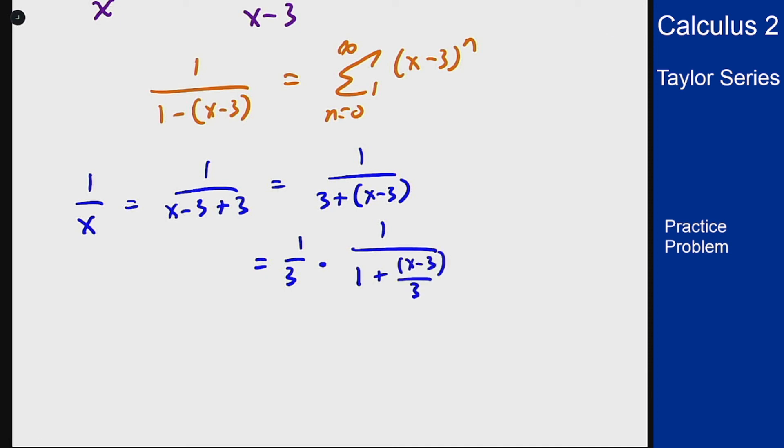By our normal power series tricks we know this is 1 over 1 minus u goes to sum of u to the n. So this will become taking our u as negative x minus 3 over 3.